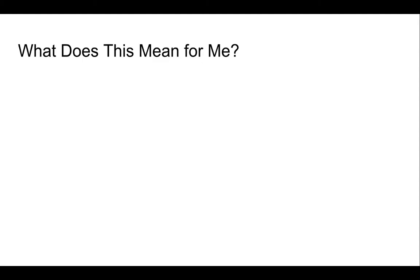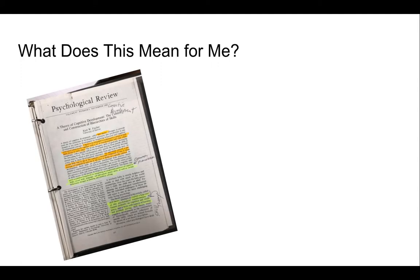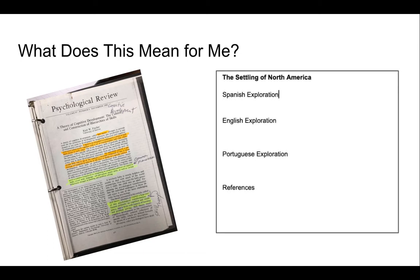So what does this mean for you? Even though you may have started using the article-based strategy, where all your notes are grouped by articles instead of by topics, give this idea-based strategy a try. Just try it for the next two articles that you're going to read. It's easy to set up — open a Google Doc, identify some headings that are relevant to your topic, begin to read your article and group your notes based upon these headings, or add others that are relevant.